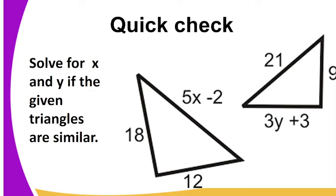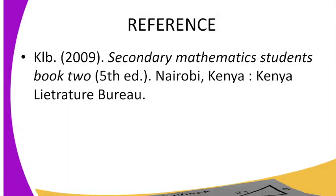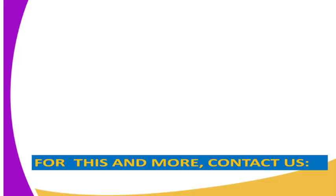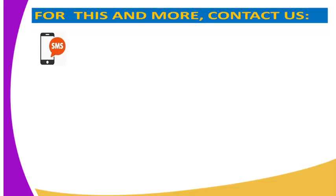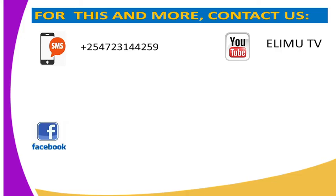For reference, you can go to KLB Secondary Mathematics Student Book 2, that is 5th edition. And then, for this and more, you can contact us through our SMS number, 0723-144-259. On YouTube, you can get us through Elimu TV. On Facebook, you can get us through Elimu TV. And finally, on Twitter, you can get us at underscore Elimu TV Kenya.